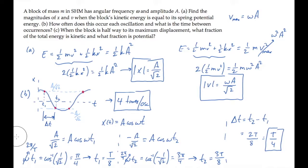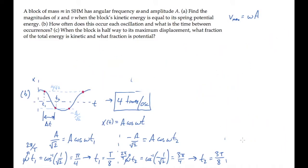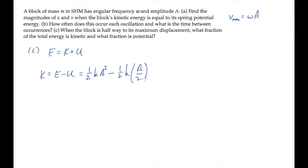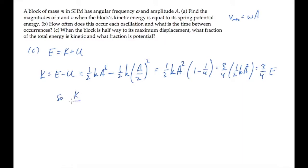Now let me erase this so we have room to solve part C. Part C asks what fraction of the total energy is kinetic and potential when the block is halfway to its maximum displacement. The total energy is the kinetic plus the potential, so we can write this for the kinetic: that's one half k A squared minus one half k x squared, where x is half the amplitude. Simplifying the algebra shows us that the kinetic energy is 3 quarters of the total energy when the displacement is half the amplitude. That means the fraction KE over E is 3 quarters — 3 quarters of the energy is kinetic. Because the total energy is the sum of kinetic and potential, the potential energy must take up the remaining 1 quarter of the total.